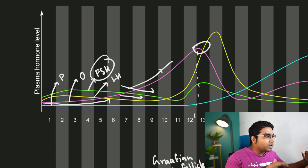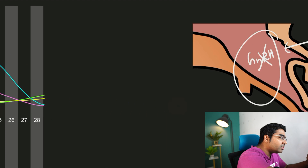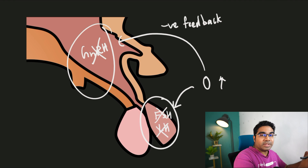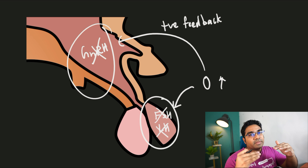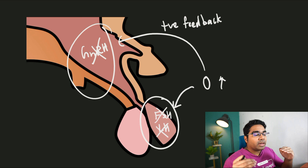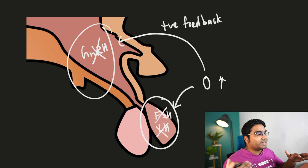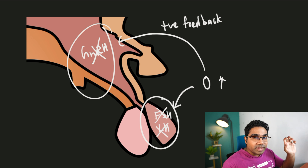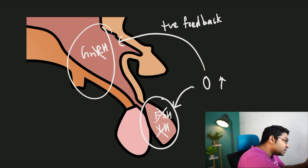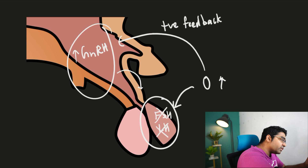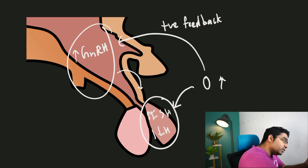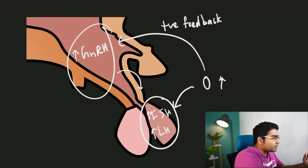Very high levels of estrogen have the opposite effect — instead of a negative feedback, they exert a positive feedback on the hypothalamus and the anterior pituitary gland. At these very high estrogen levels, GnRH secretion increases, which in turn increases the secretion of FSH and LH, so FSH and LH levels rise as seen on the graph.